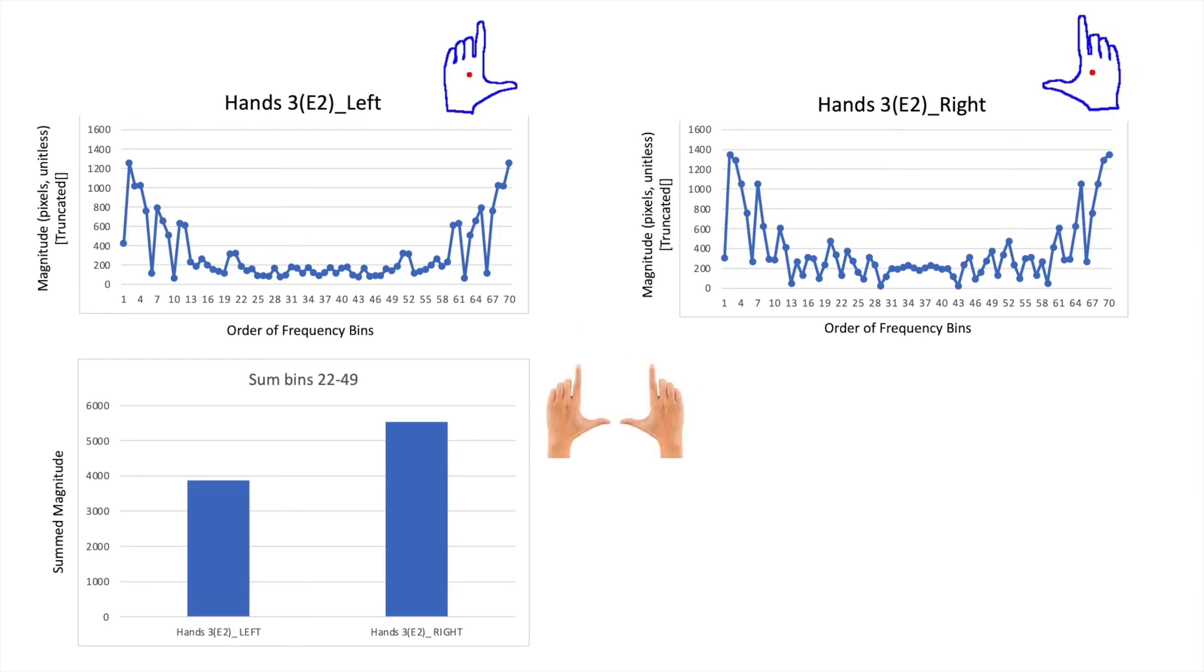For hands 3, they are hands with a really different formation. The bar graph shows that the sum value for the middle bins for right is greater than for the left, which matches our rules.